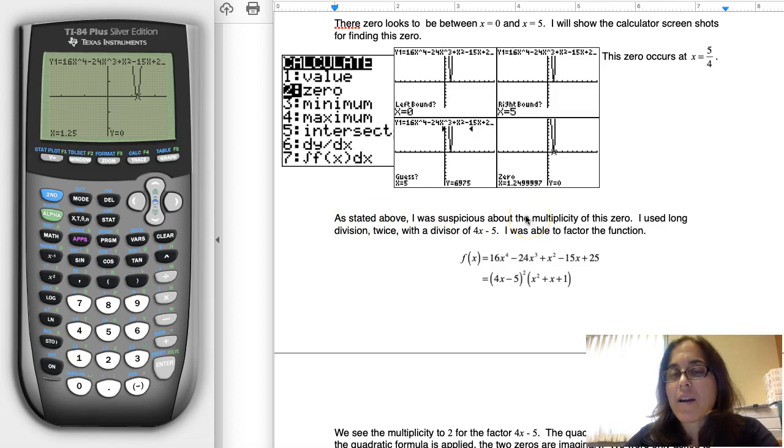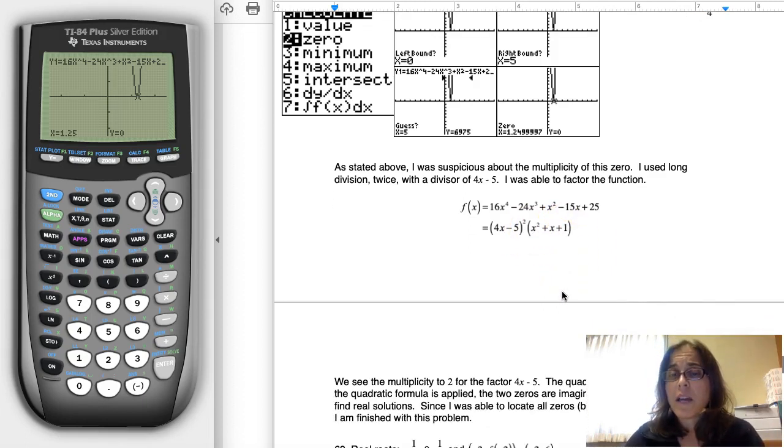Since I knew about that multiplicity of the zero, I used long division twice. So I divided this polynomial, the quartic, the 16x to the fourth minus 24x cubed, blah, blah, blah. I divided that by 4x minus 5. And then I divided that again by another 4x minus 5 because I had that double zero, that multiplicity of 2. And then the quadratic that was left over was x squared plus x plus 1. And that doesn't factor. There was nothing I could do there.